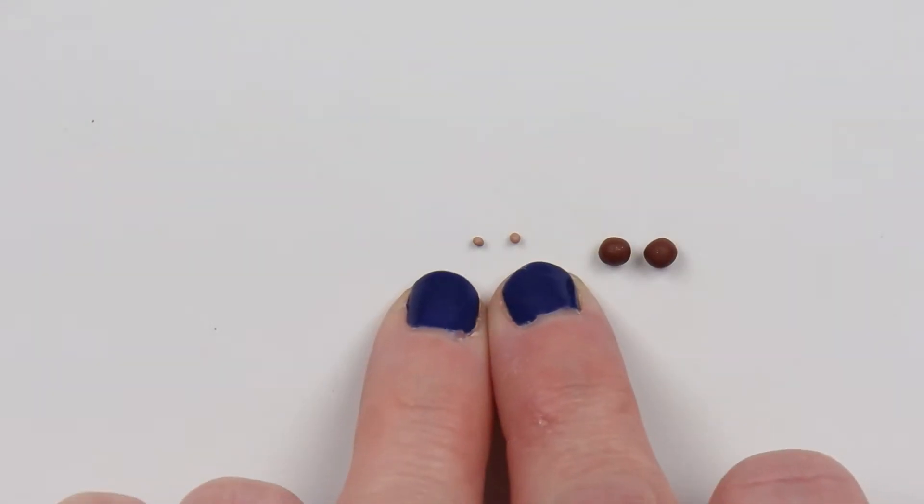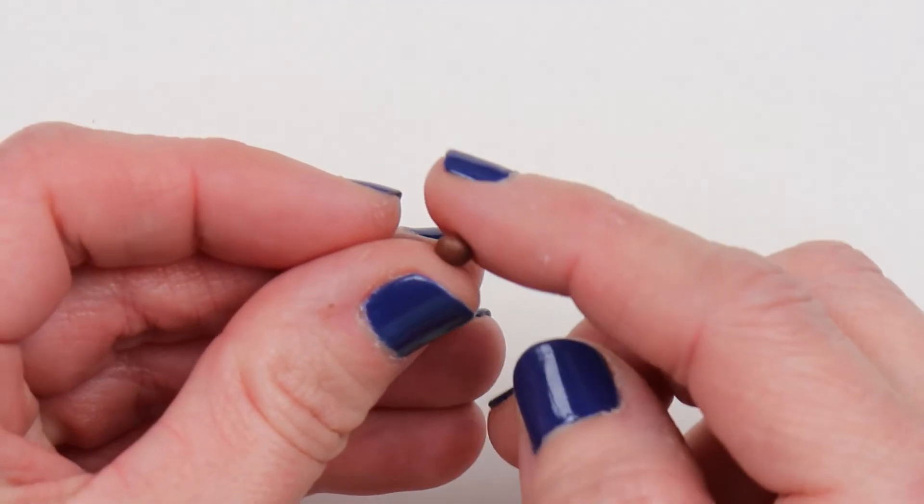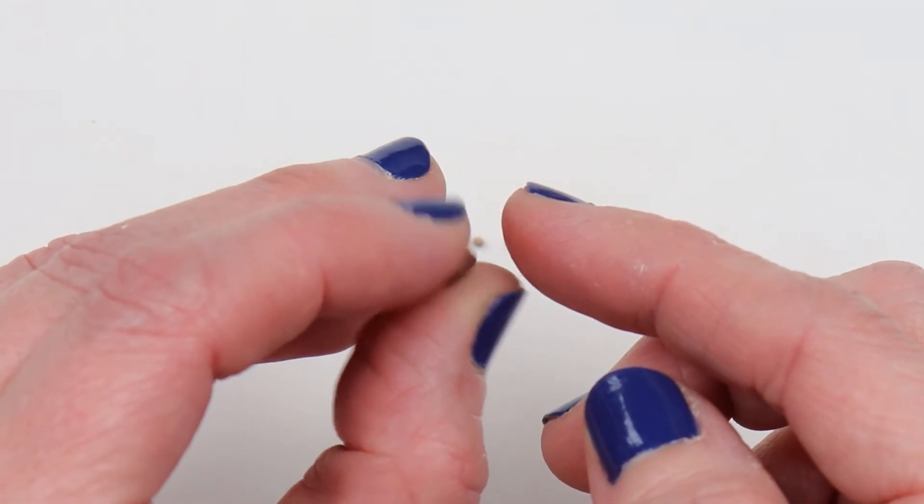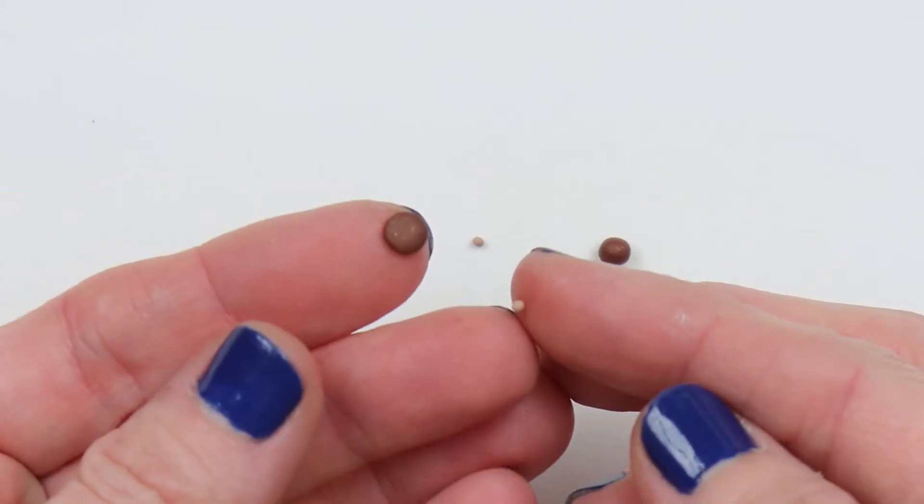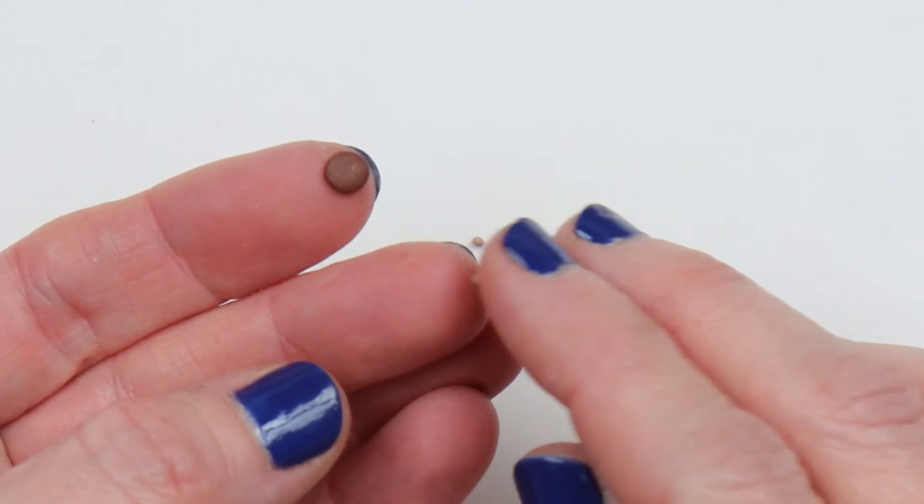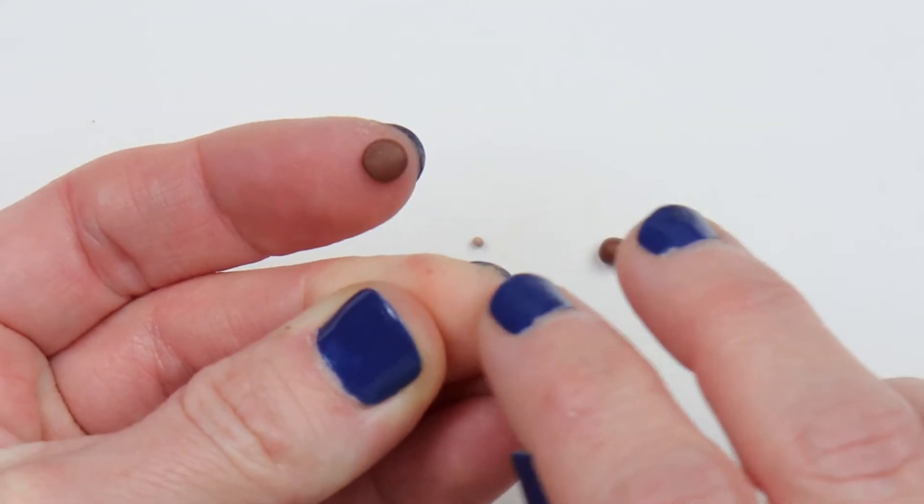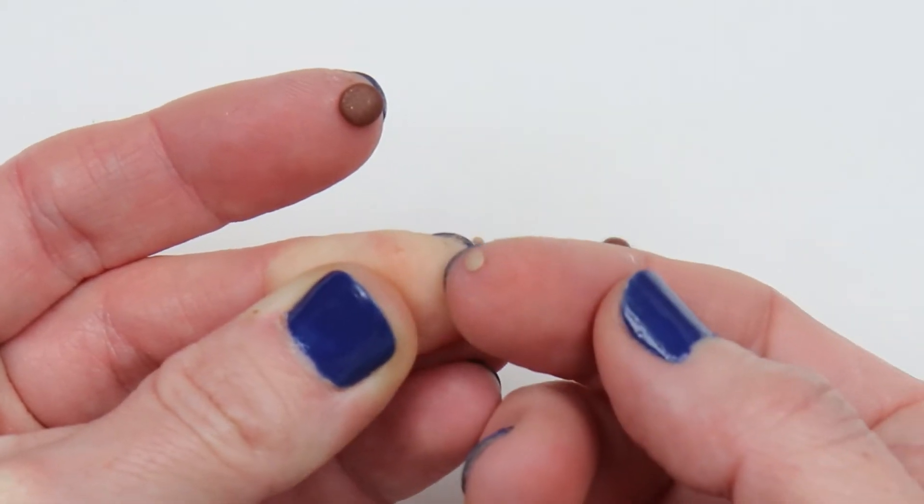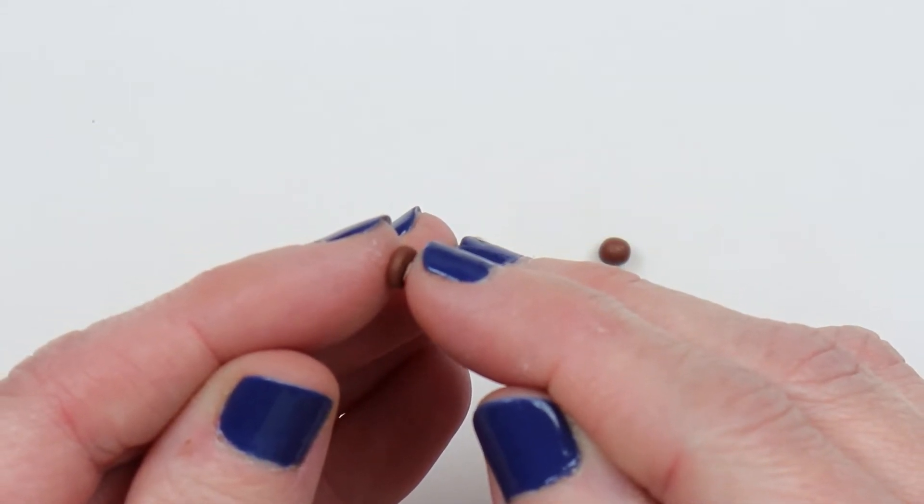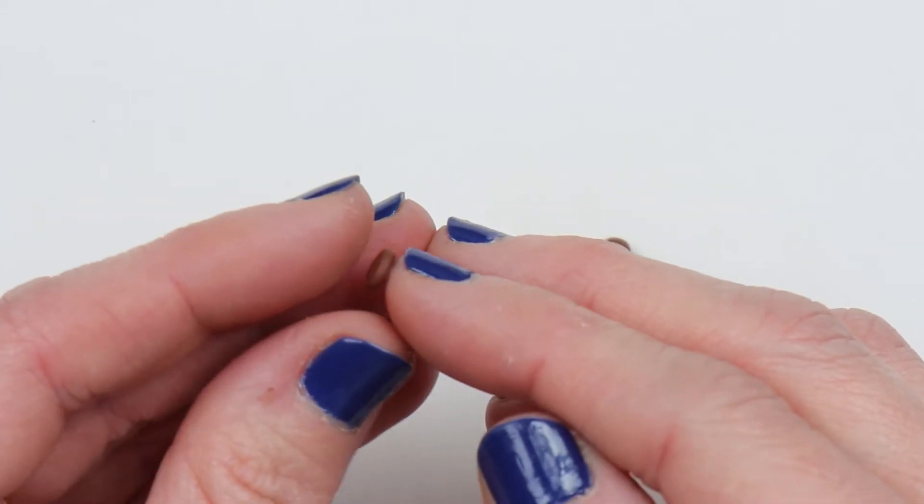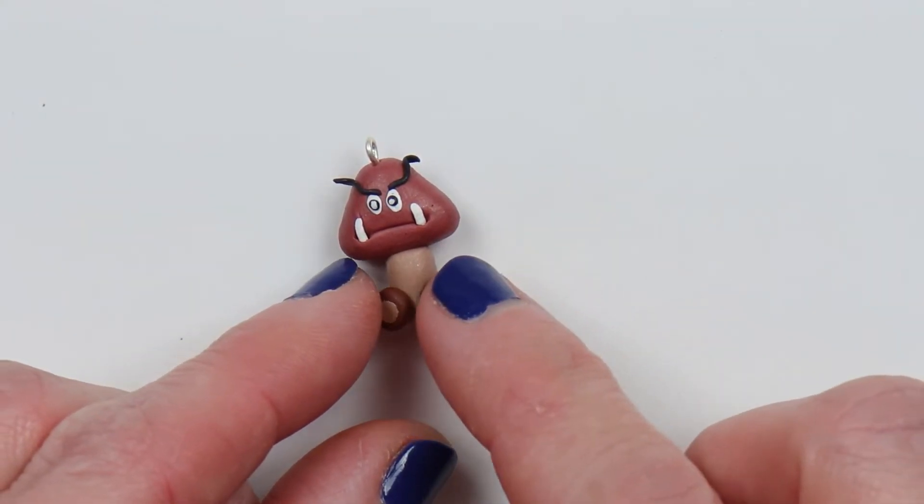To make the feet, roll out two balls of dark brown clay, and then two balls of tan colored clay. Slightly flatten the ball of dark brown clay. It'll kind of look like a pancake. Mmm, pancakes. Take the small ball of tan clay, and then pinch it between your fingers and flatten it. Place this in the center of the dark brown clay. Make a second one, and attach these to the bottom of the goomba body.